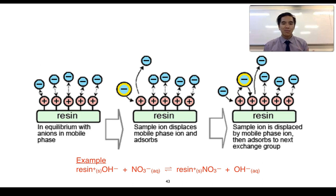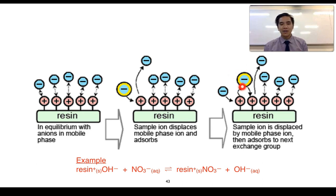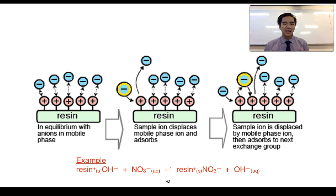Because we are constantly supplying our mobile phase, this is going to allow for the ions in the mobile phase to do the same thing. We get this repeating process happening where the ions in our mixture can essentially be displaced, and they can then cause displacement and adsorb. So it's like adsorb, desorb, adsorb, desorb — and this can happen to varying degrees based on the nature of those anions.